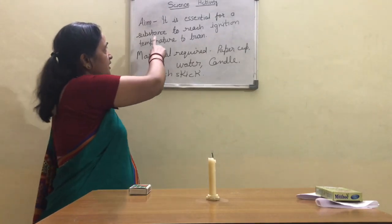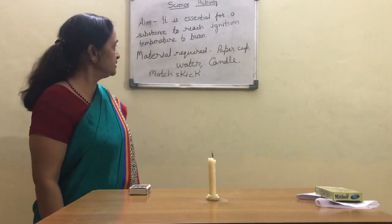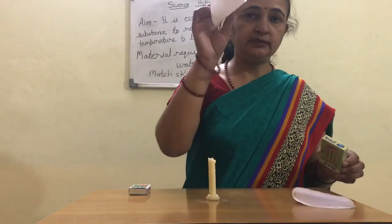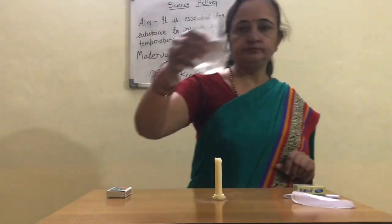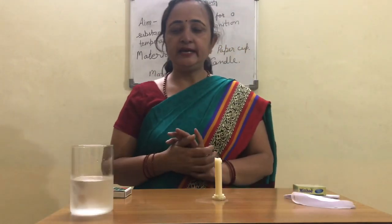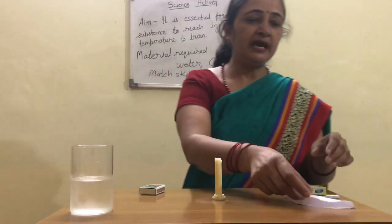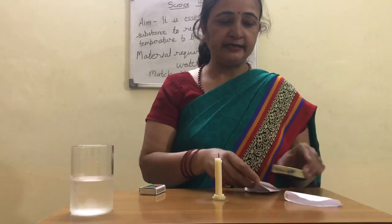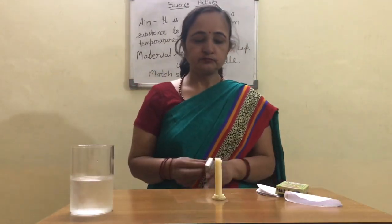Let's perform the second activity. In this activity we have to show that it is essential for a substance to reach its ignition temperature to burn. The materials required are a paper cup, a candle, a matchbox, and water. We will use two paper cups — one empty and one filled with water — and bring them over the candle one by one.